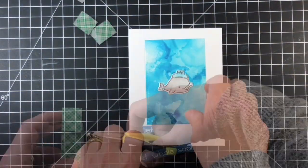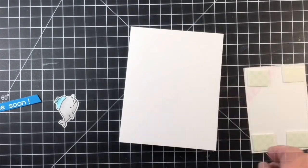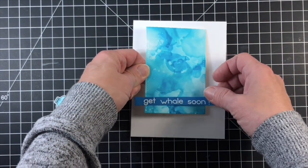Once again off camera I used my Gemini Junior to do some cutting. I used the Lawn Fawn small stitch rectangle dies to cut my alcohol ink panel, and the sentiment was die cut using a sentiment strip die from My Favorite Things.